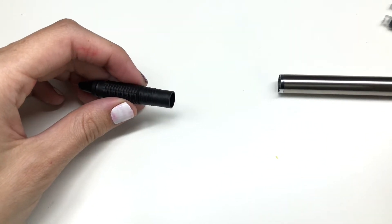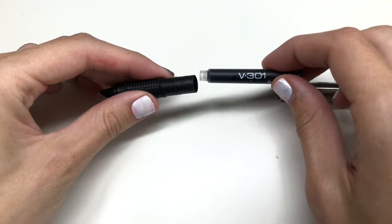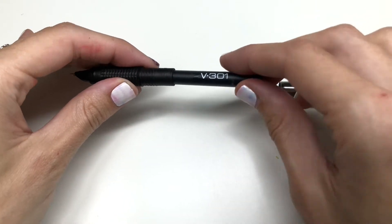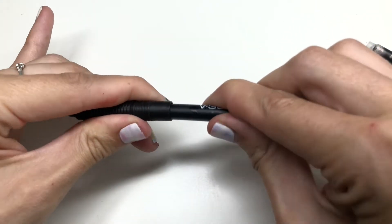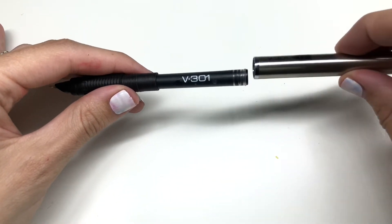Take your ink and replace the smaller end into the tip of the pen. You will hear a little pop—that's how you'll know the ink is attached to the pen.